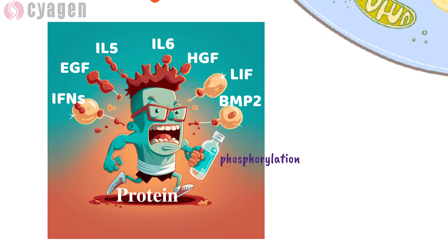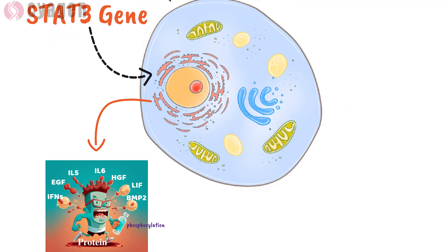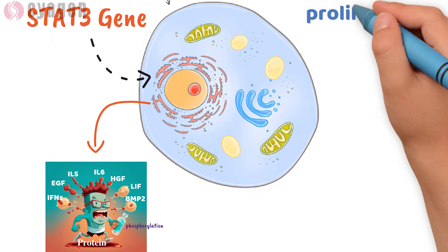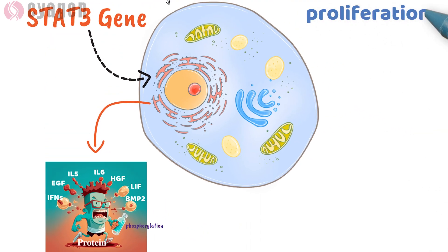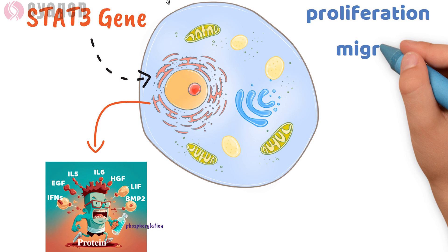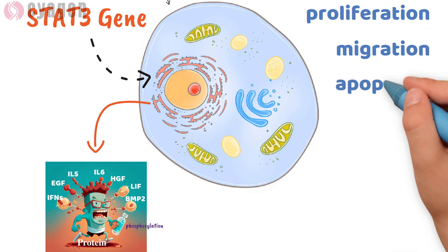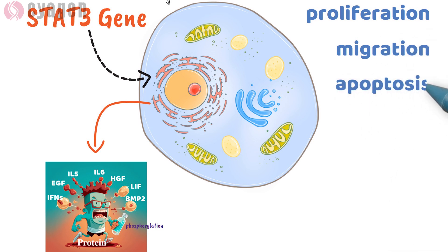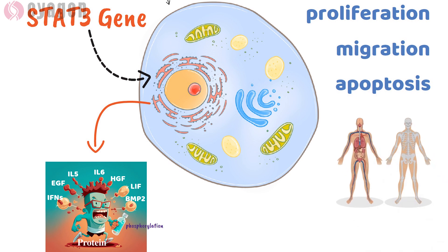The STAT3 protein, active in various tissues, regulates critical cellular processes including proliferation, migration, and apoptosis. Its significant role in the development and function of numerous body systems renders it essential for life.